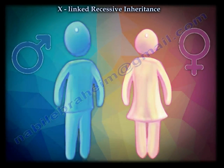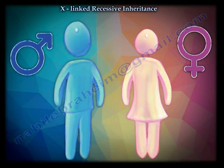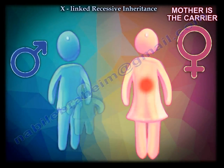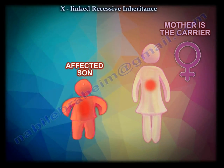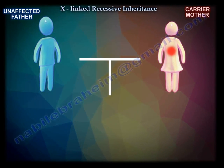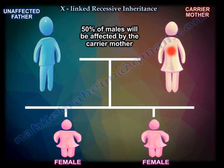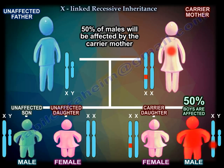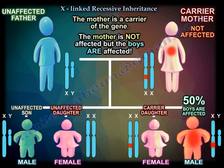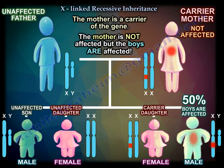X-linked recessive inheritance. In X-linked recessive, the mother is a carrier, and it affects the males only. 50% of the males will be affected for a carrier mother. Think of hemophilia — the mother is carrying the gene. The boys will be affected, but the mother is not affected. 50% of the boys will be affected.